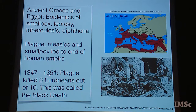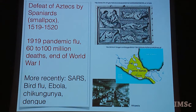Between 1347 and 1351, plague killed about three Europeans out of ten — the Black Death. Just imagine taking this audience and removing 30% of it. Another example is the collapse of the Aztec and Inca empires when the Spaniards came in due to smallpox. The Spaniards had some immunity from prior exposure, which the Aztecs — having never been exposed — did not have, so they died by the millions. In 1919, at the end of the First World War, there were about 60 to 100 million death cases from pandemic flu. More recently: SARS, bird flu, Ebola, chikungunya, dengue, and so on.